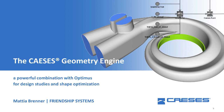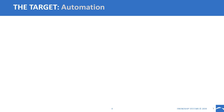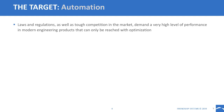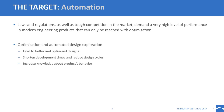Thank you for the introduction, John. Hello to all participants. Today I'd like to talk about our software tool CASIS and how it can be used as a geometry engine in combination with Optimus to run design studies and shape optimization. The target is automation of the design process. There is very high demand in performance for engineering products, and a great way to meet that demand is through optimization, which can lead to better designs, reduced design cycles, and increased knowledge about how a product behaves due to parameter changes — very early on in the design process.